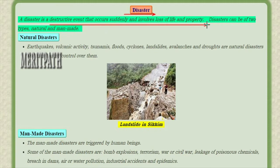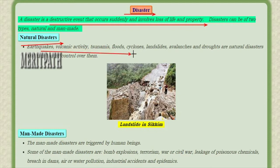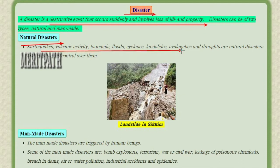Disasters can be of two types. Natural disasters such as earthquakes, volcanic activities, tsunamis, floods, cyclones, landslides, avalanches, and other natural disasters — and man has no control over them.